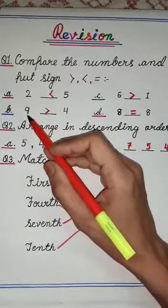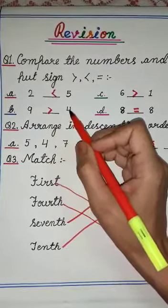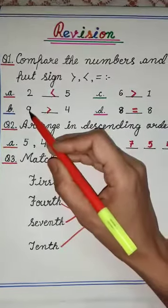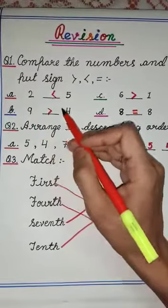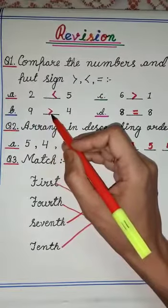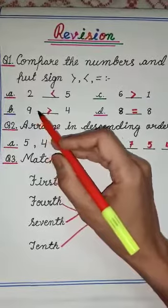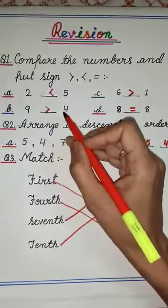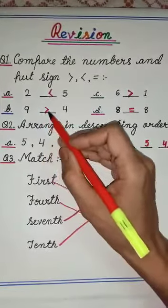Here we have numbers 9 and number 4. We know that 9 is bigger than 4. So we will put here this sign which shows 9 is bigger than 4 or 9 is greater than 4.